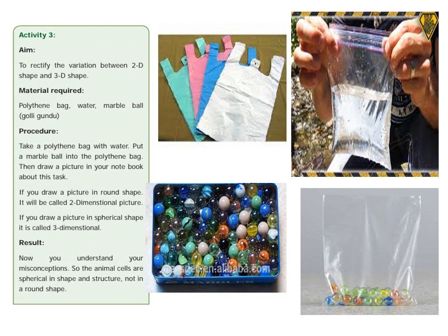If you want to see one activity, you can see it. The aim is to rectify the variation between 2D shape and 3D shape — you can see the shape very clearly.